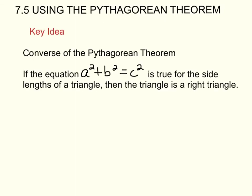The key idea talks about the converse of the Pythagorean Theorem. Here's what the converse means. If you have an equation, if you use the Pythagorean Theorem, a squared plus b squared equals c squared, if it is true for the side lengths of a triangle, then the triangle is a right triangle. So you can prove a triangle is right or not by plugging it in and seeing if it works.